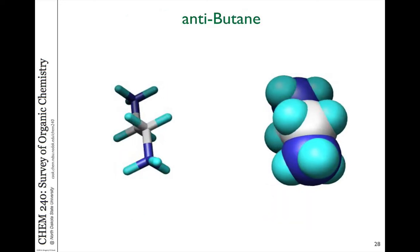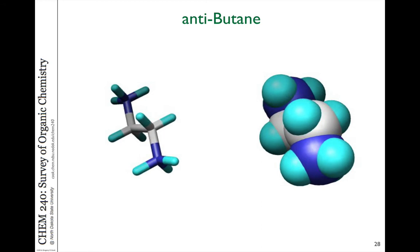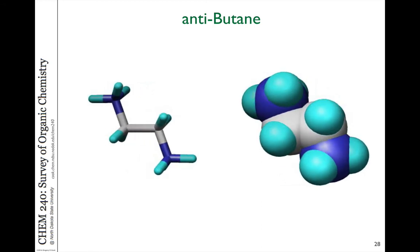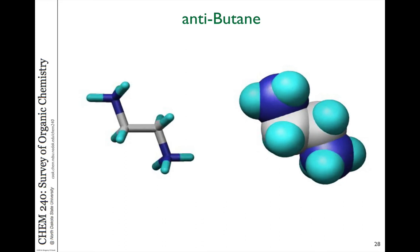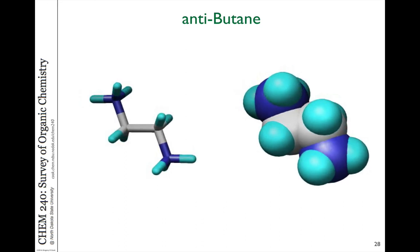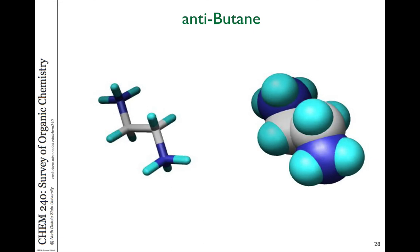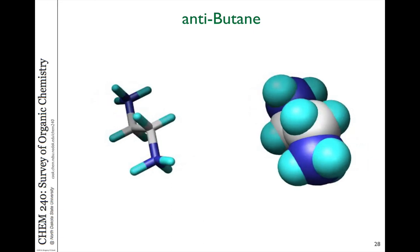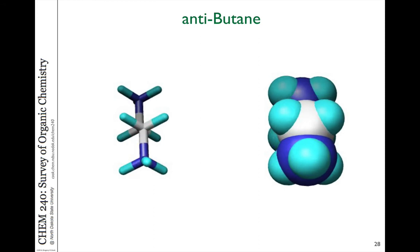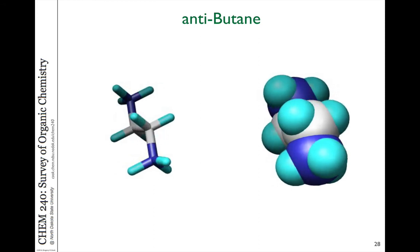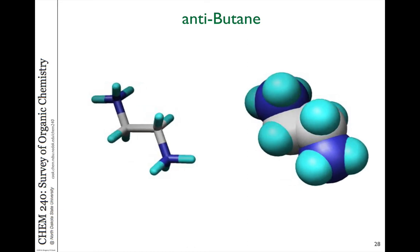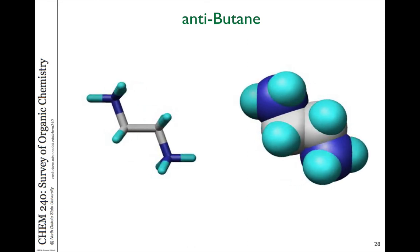Here is the sawhorse picture for butane. Looking down the central bond as a Newman projection, from the front carbon you see two hydrogens — one up-left, one up-right — and a CH₃ group straight down. On the back carbon, there is a CH₃ going straight up, with a hydrogen down-left and a hydrogen down-right. The space-filling model illustrates how much larger the methyl group is compared to the hydrogens.